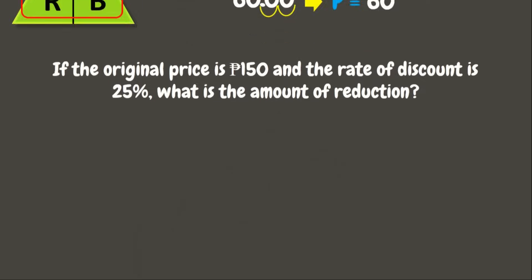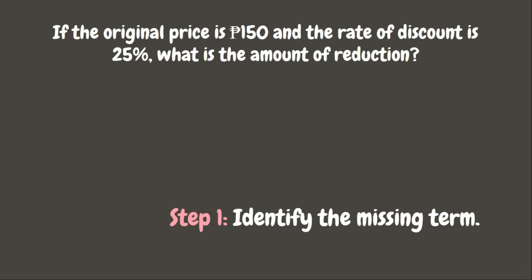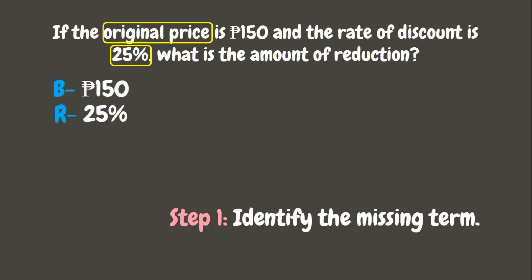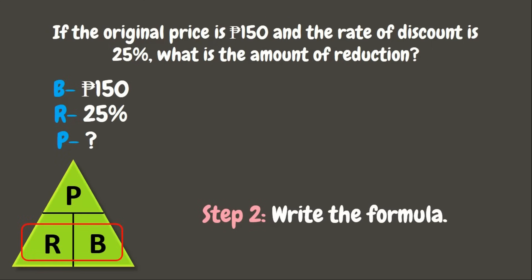Great job. Let's try another one — a word problem. If the original price is 150 pesos and the rate of discount is 25%, what is the amount of reduction? The first thing to do is identify the missing term. The original price is the original or entire amount, which is 150. That means this is our base. Since 25% has the percent sign, that is our rate. This leaves us with percentage as the missing term. Now it's time to write the formula: P equals R times B.